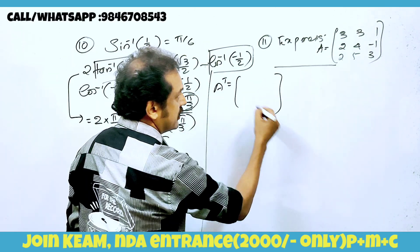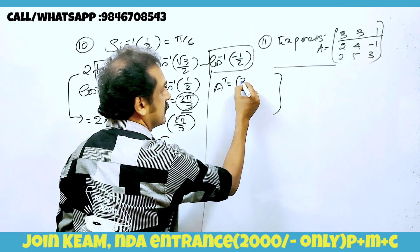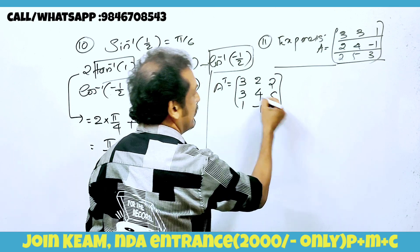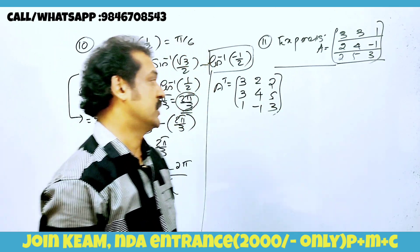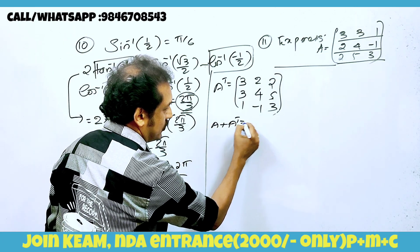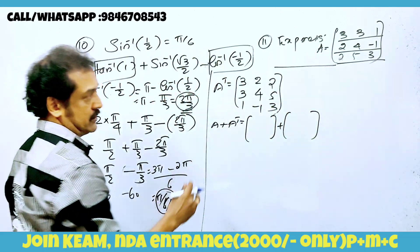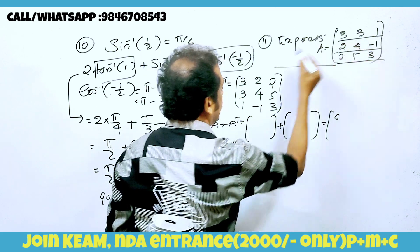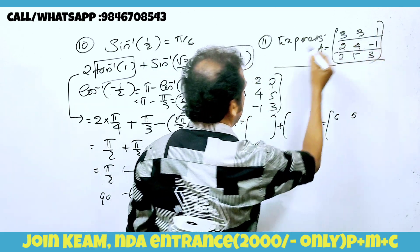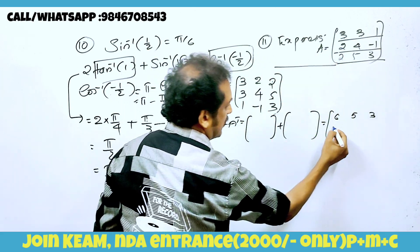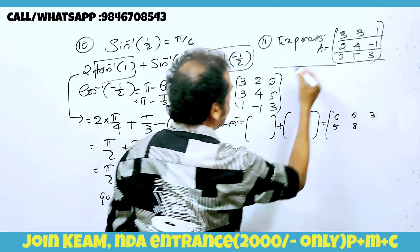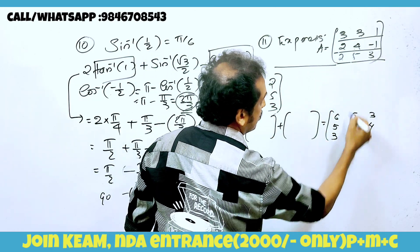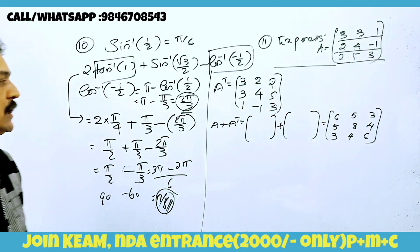We need the transpose of matrix A. The first row is [2, 3, 3], then [3, 2, 1, 2], then [2, 3, 2, 3]. Now computing A + Aᵀ element by element: 3+3=6, 3+2=5, 1+3=4 (wait: relevant entries), then 2+3=5, 4+4=8, -1+5=4, then 2+1=3, 5-1=4, 3+3=6. So A plus A-transpose is computed and ready.